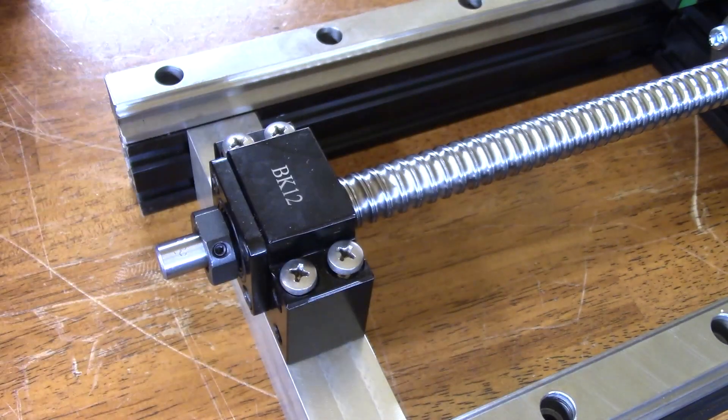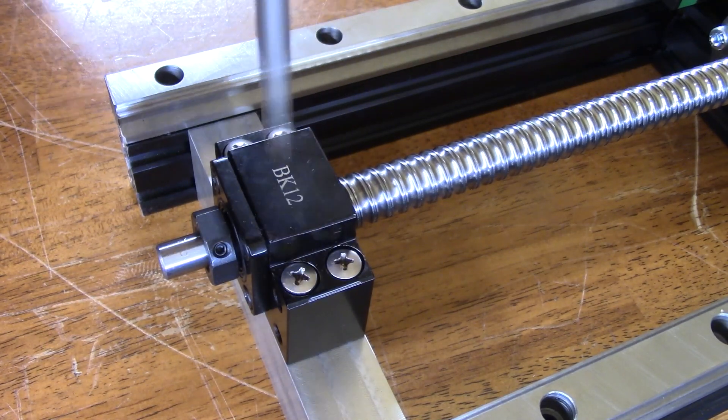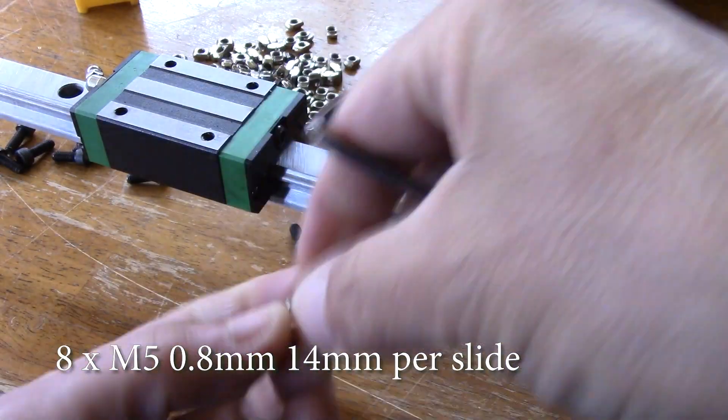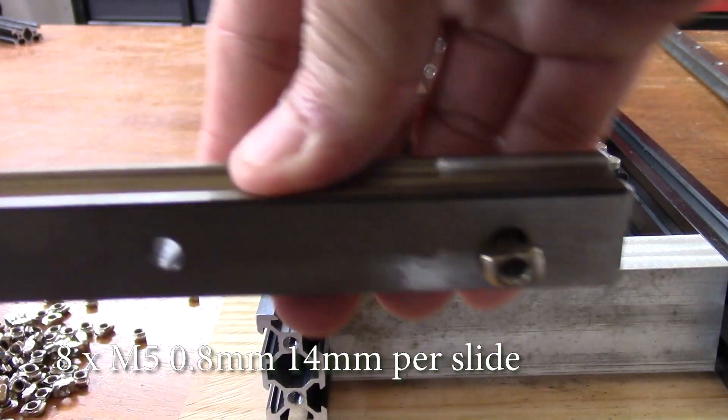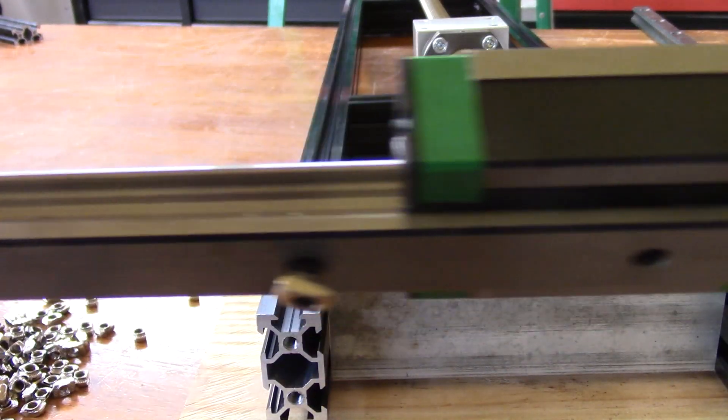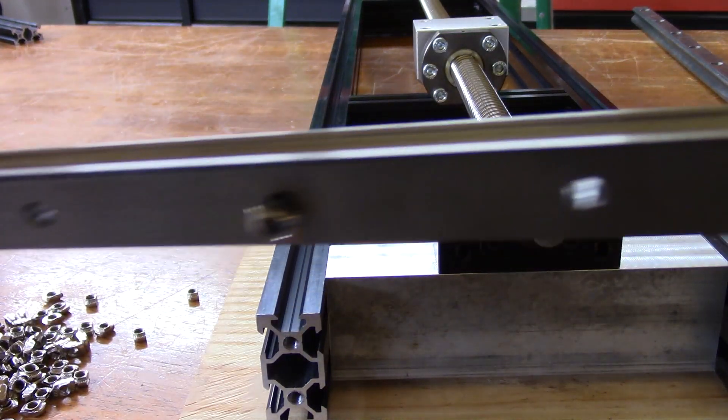Four of the same 35mm long screws will be used to secure the BK12 into the aluminum block. What remains now is the tedious task of adding multiple M5 0.8 14mm long socket head screws into the slides along with an equal amount of 20x20 T-nuts.